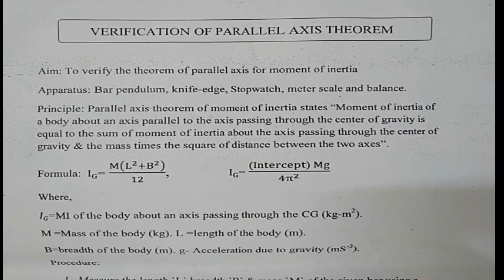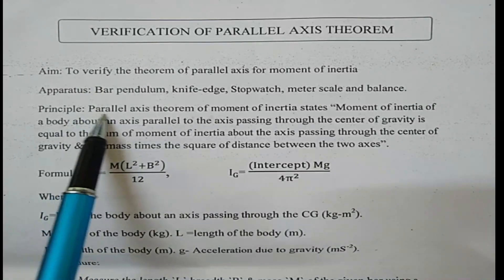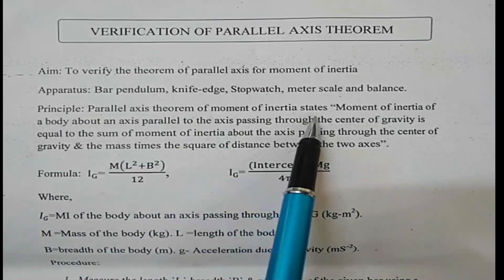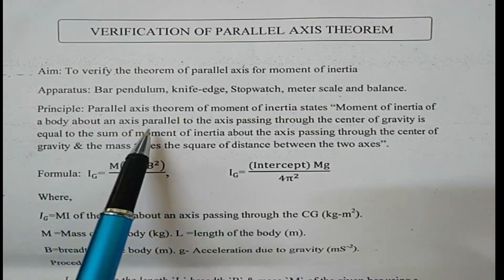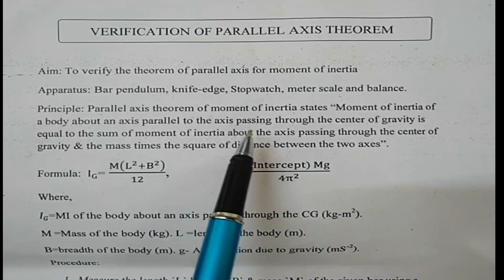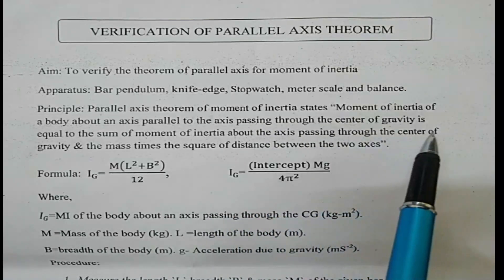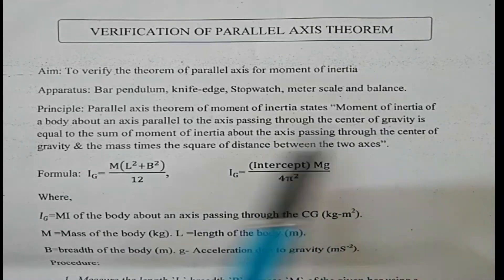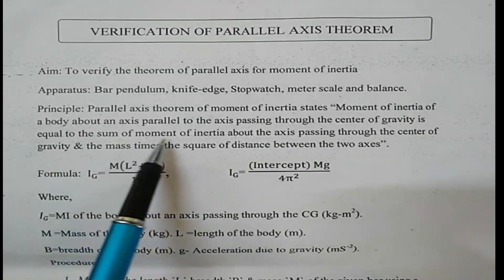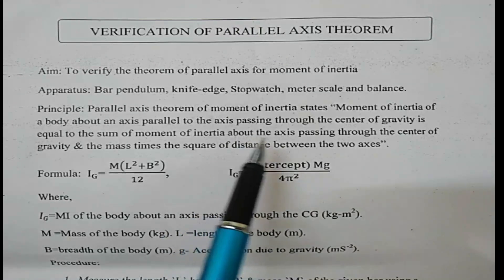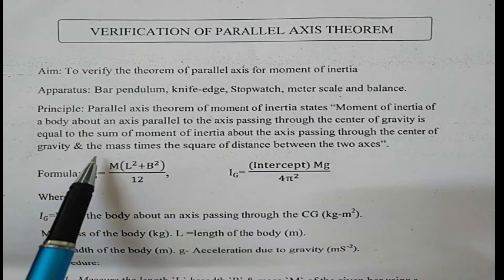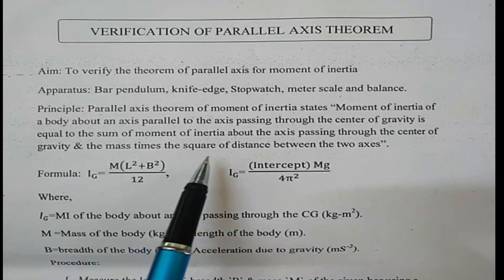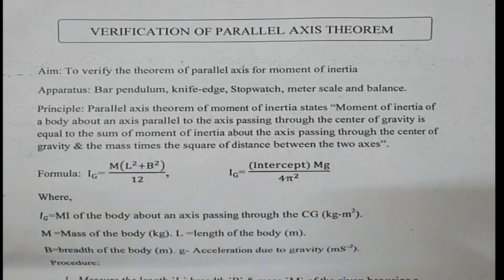The experiment follows this principle: the parallel axis theorem of moment of inertia states that the moment of inertia of a body about an axis parallel to the axis passing through the center of gravity is equal to the sum of the moment of inertia about the axis passing through the center of gravity and the mass times the square of the distance between the two axes.